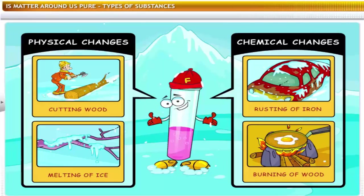Cutting wood and melting ice are examples of physical changes. On the other hand, the rusting of iron, burning of wood, and eggs cooked into an omelet are examples of chemical changes.